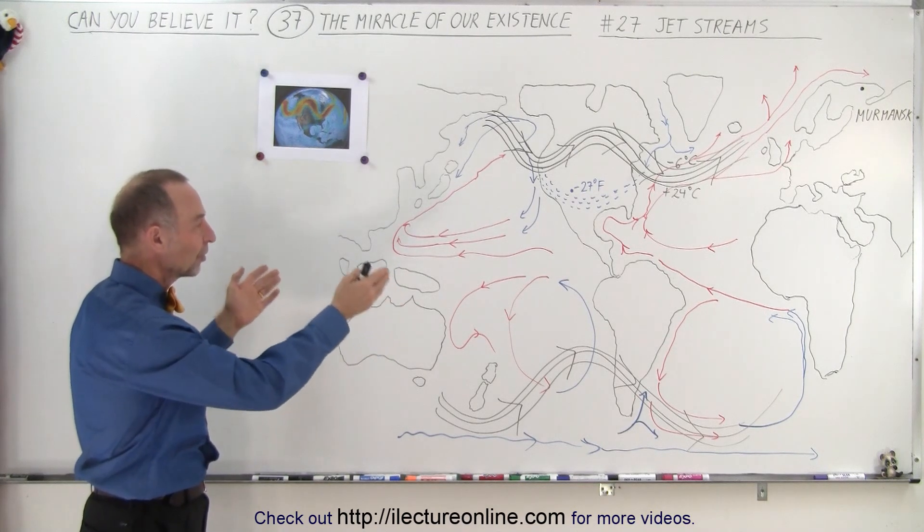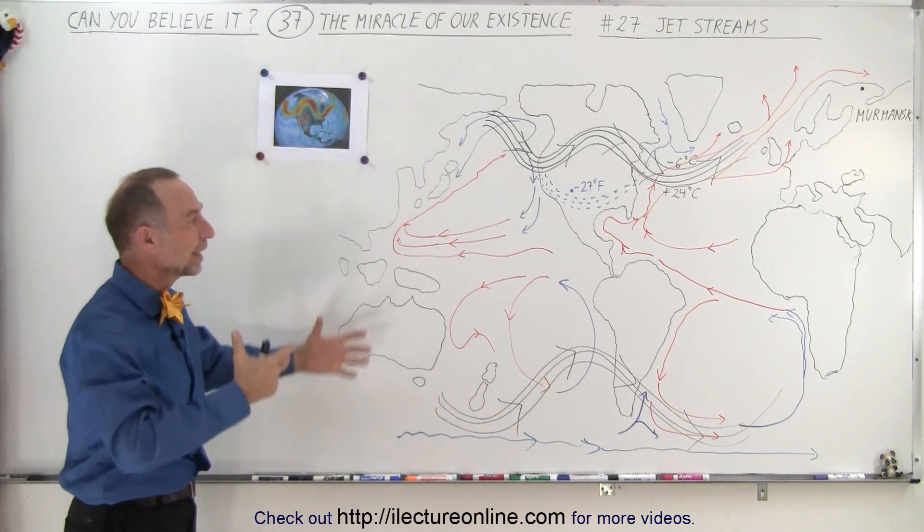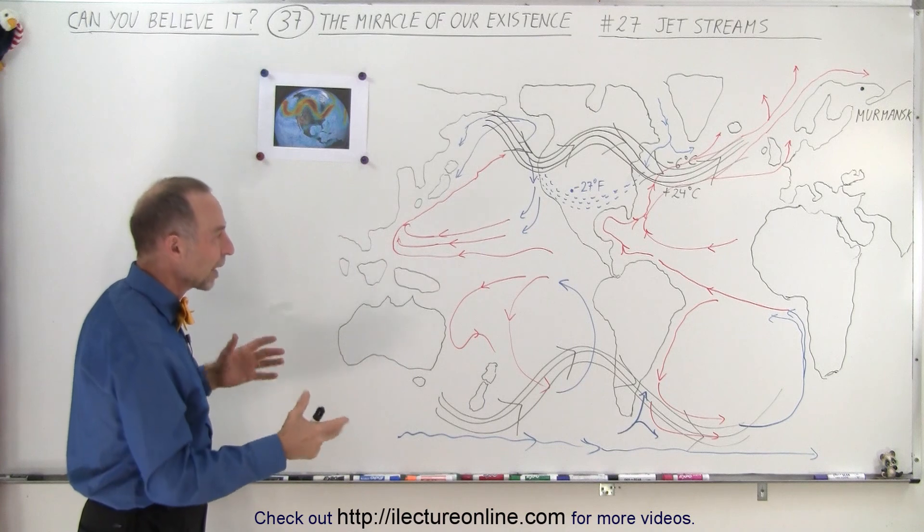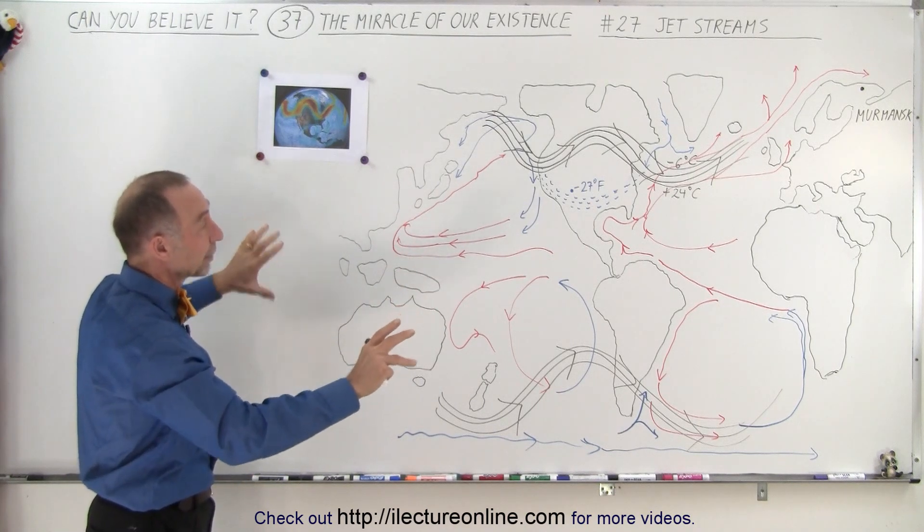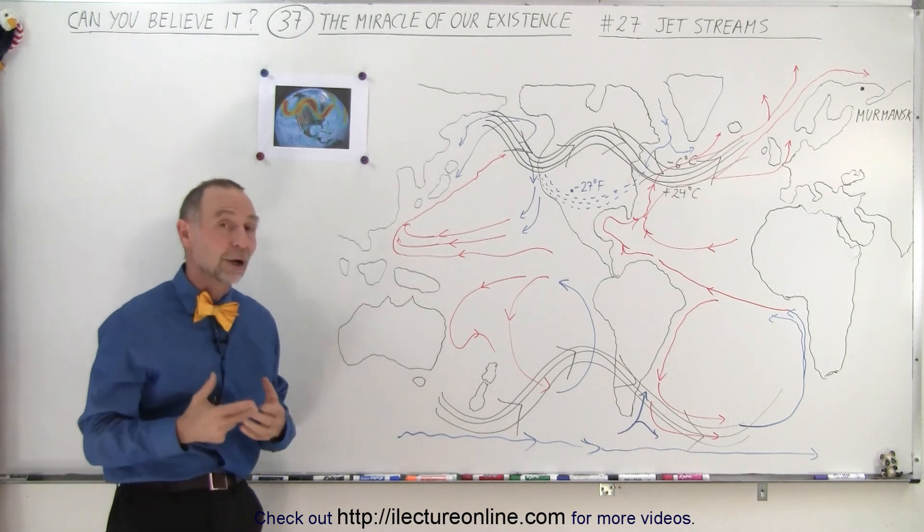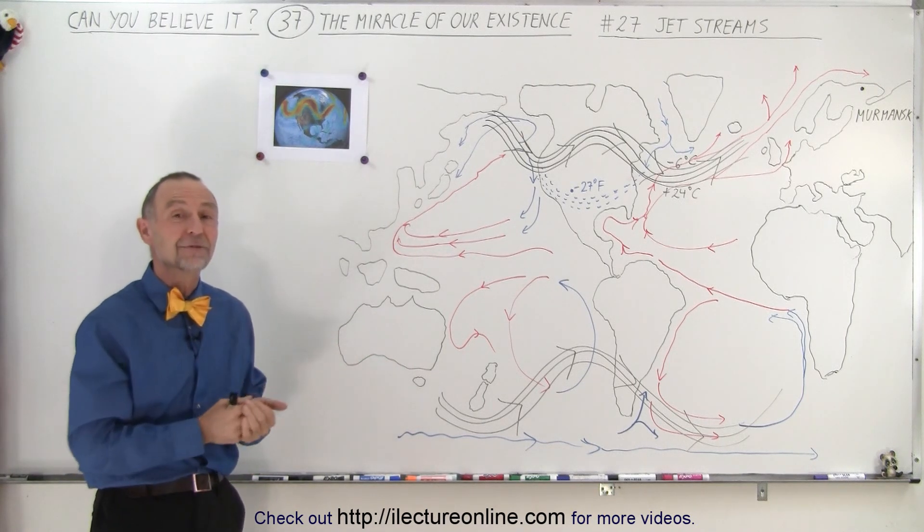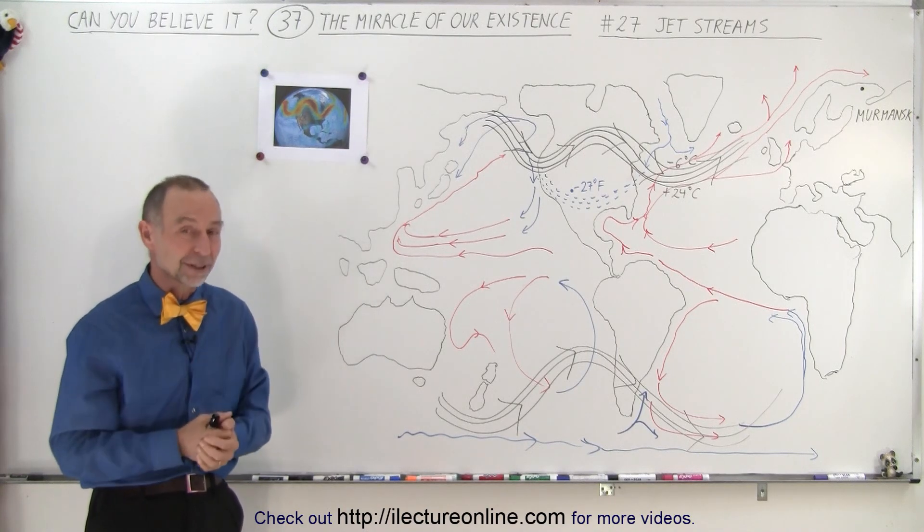So together with the ocean currents and the jet streams, we have this continual conveyor belts everywhere, moving air masses around, moving water streams around in the oceans, to redistribute the heat of the earth in such a way that the entire earth is actually quite a nice place to live due to the availability of these conveyor belts. And that's why it's such an incredible place for us to live.